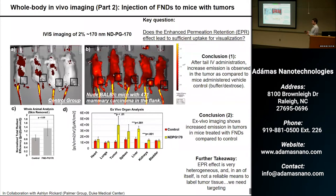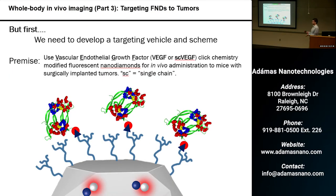However, EPR in and of itself is quite heterogeneous, so it's not an ideal technique to use to label tumors. The next step was to target the tumor directly, and for that we needed to develop a targeting vehicle. What we chose was to use VEGF, or Vascular Endothelial Growth Factor.